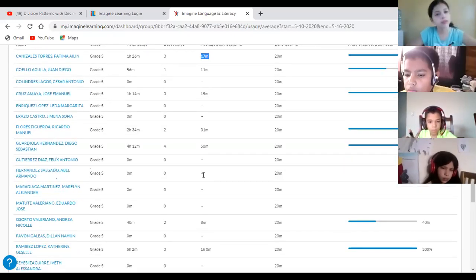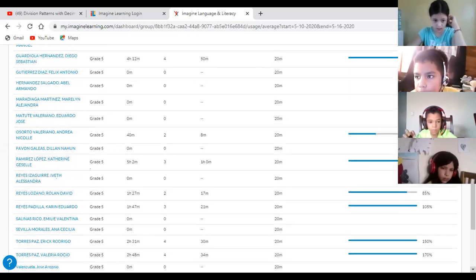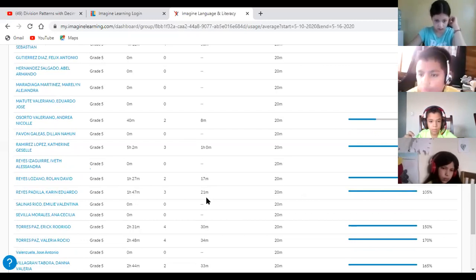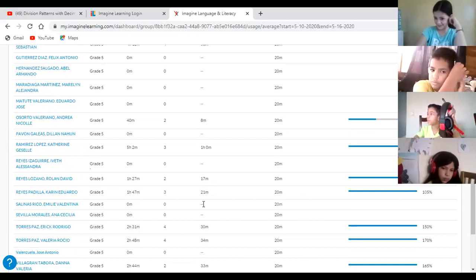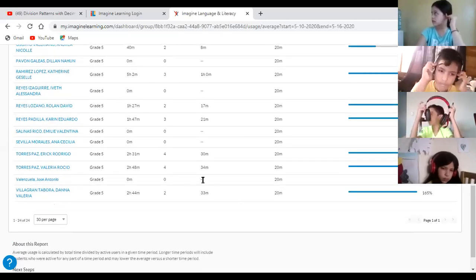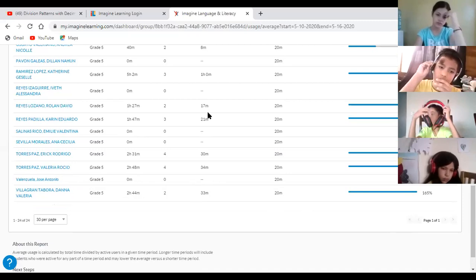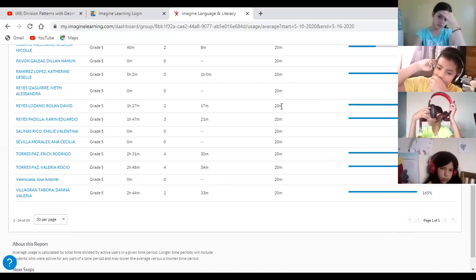Yvette no ha entrado. Emily Valentina no ha entrado. Ana Cecilia no ha entrado. Miren. José Antonio Valenzuela no ha entrado. Y hay varios que no hacen los 20 minutos. Yo les dije, hagan 30 minutos diarios a una hora para que se puedan nivelar.